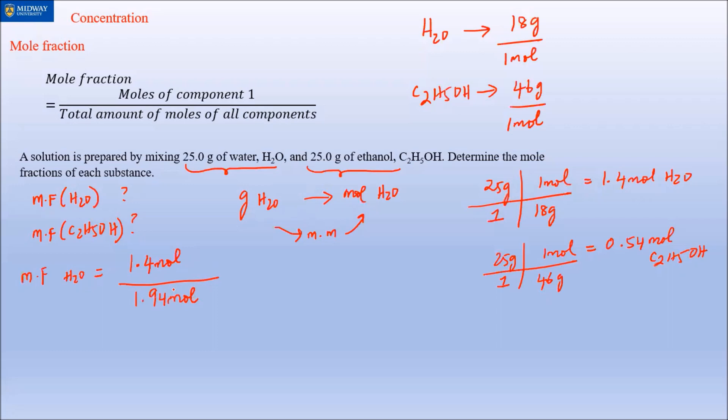Let's do the same for our ethanol. That will be 0.54—that's the mole of the ethanol component—divided by the total mole, which is 1.94 moles. So that will be 0.54 divided by 1.94, roughly about 0.28.